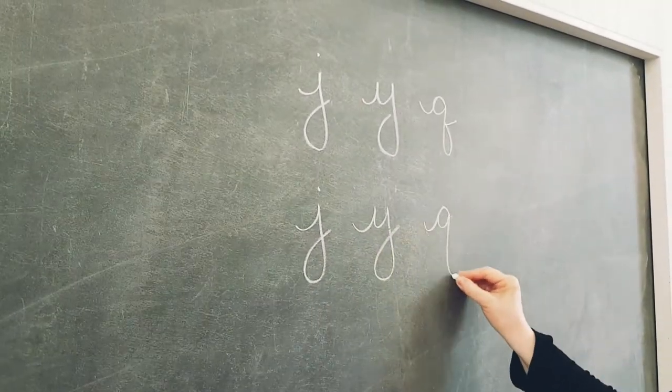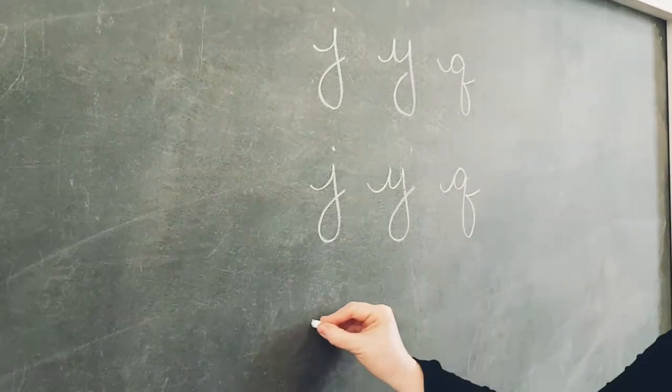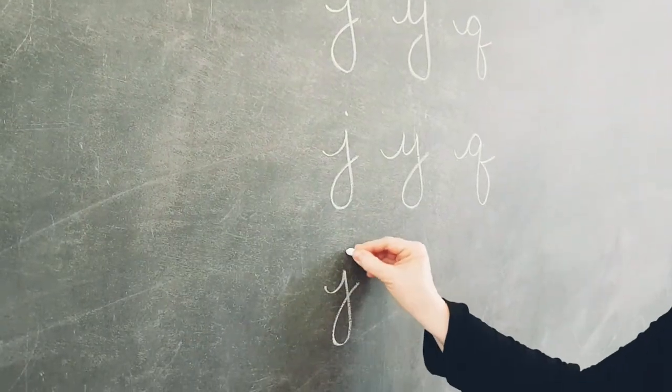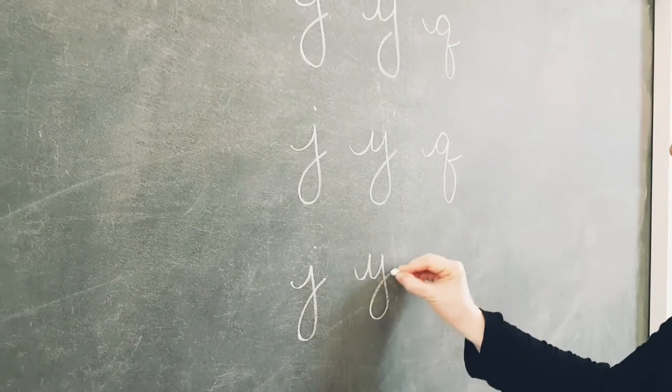The key is to make sure you have a clear dot above the J, your Y doesn't come together at the top, and your Q has that clear loop in the back of the letter, not the front.